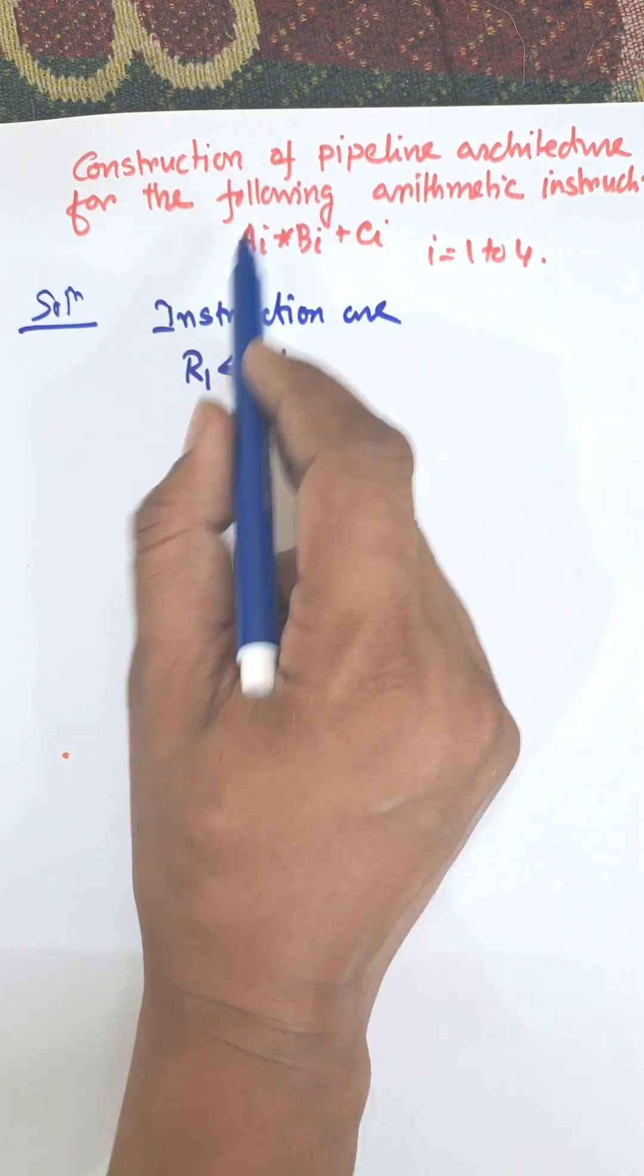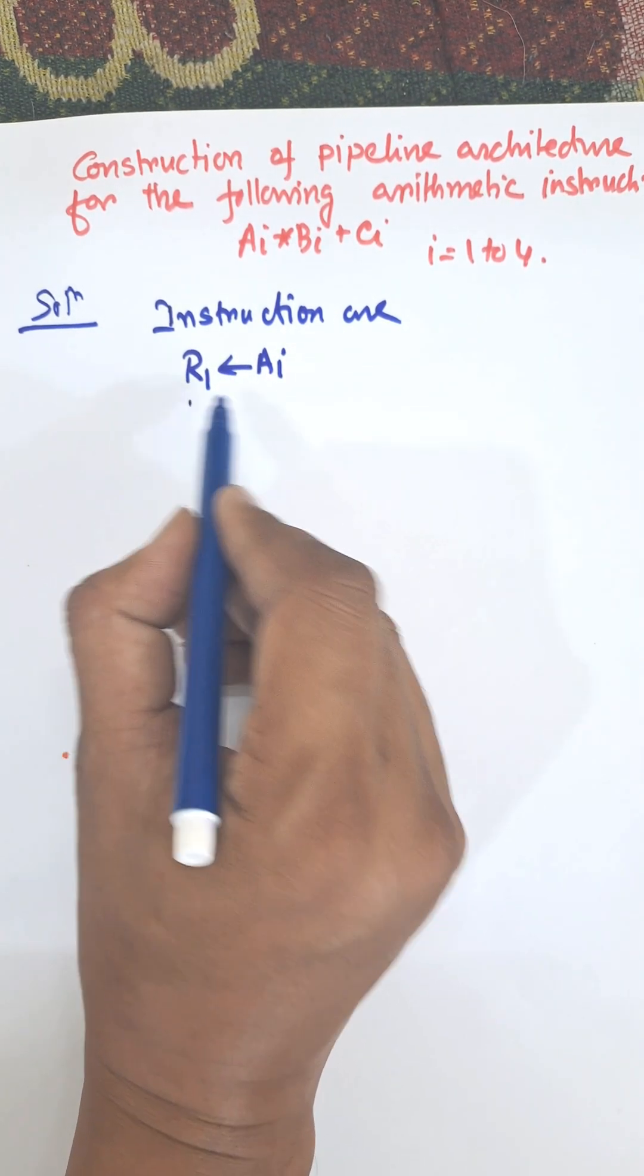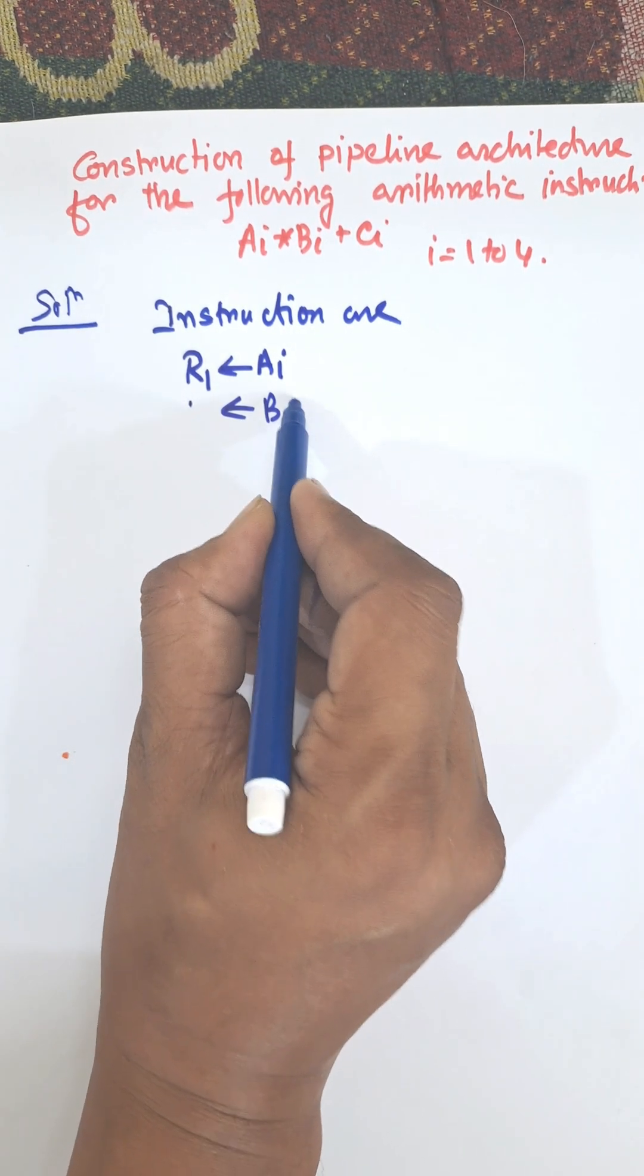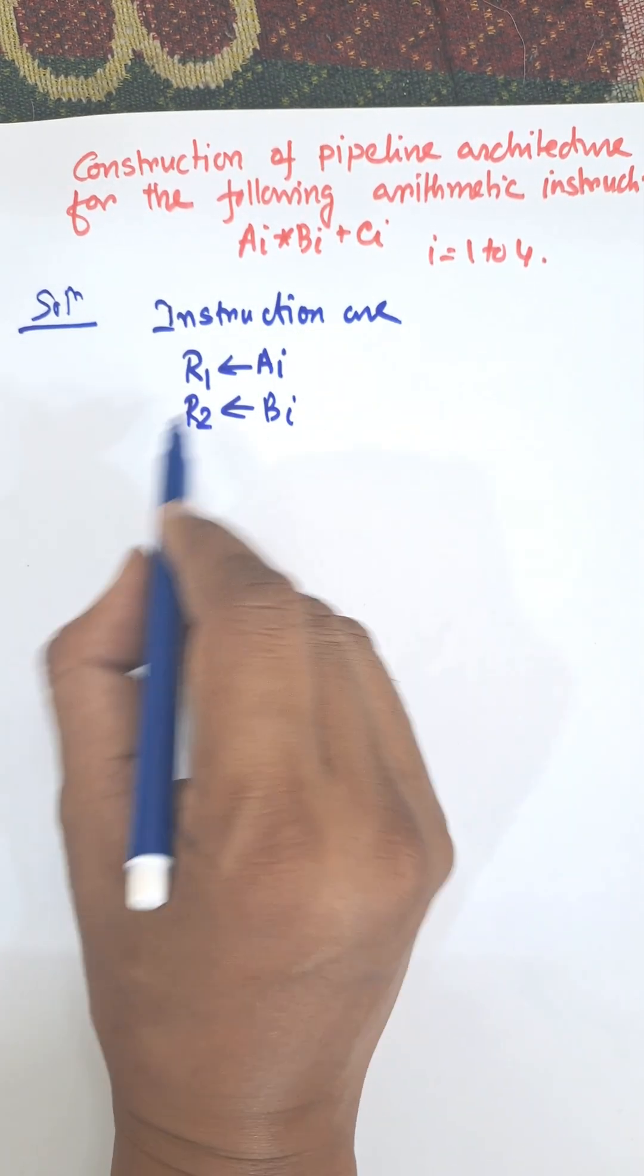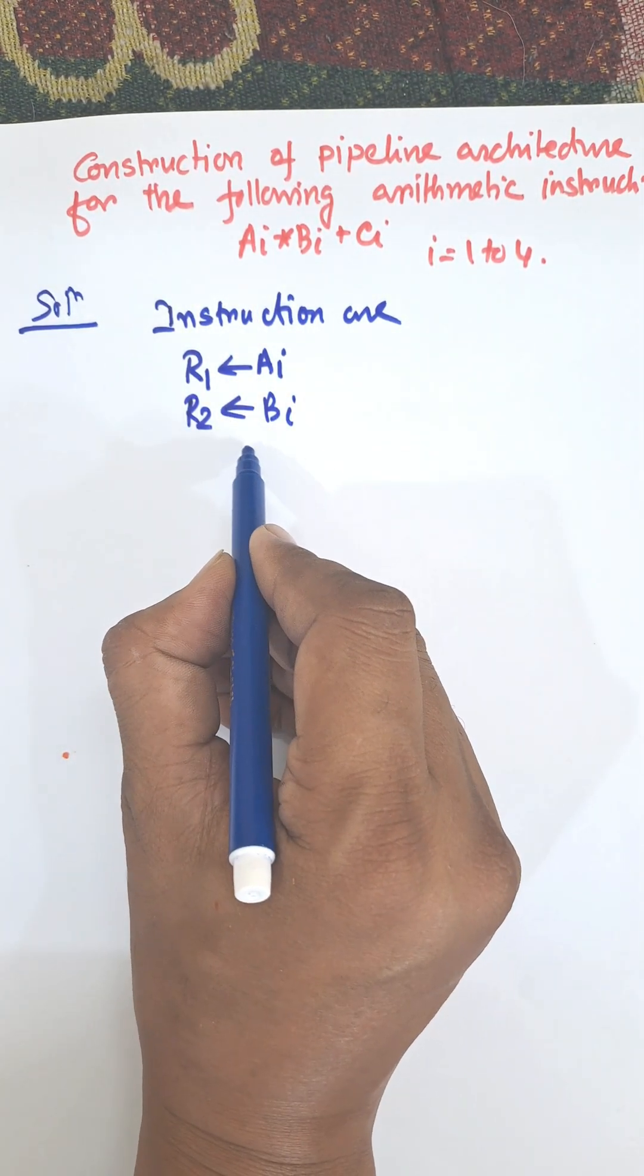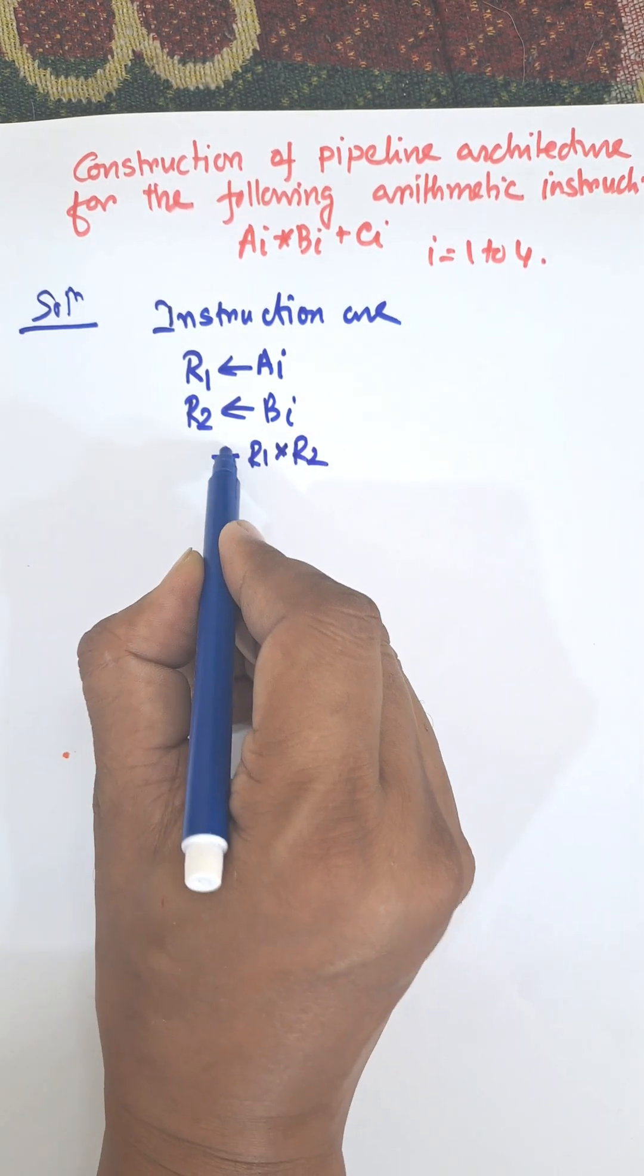This is the decomposition of this large instruction: ai is transferred to r1, bi is transferred to r2, then multiply. Because multiply operation is the first priority operation here, r1 and r2 are multiplied together and the result is transferred to r3.